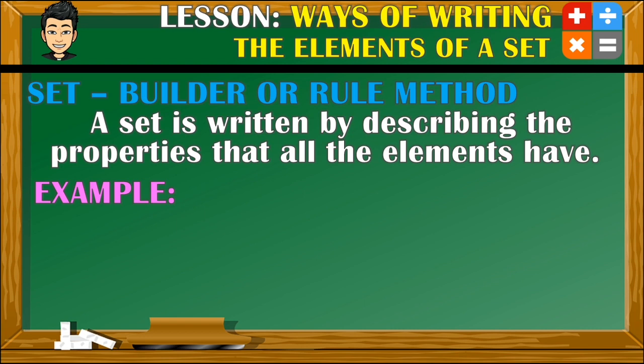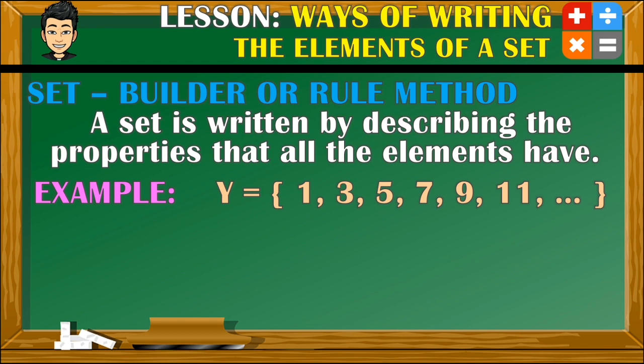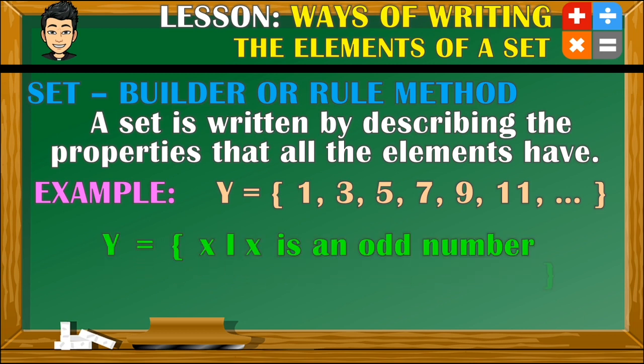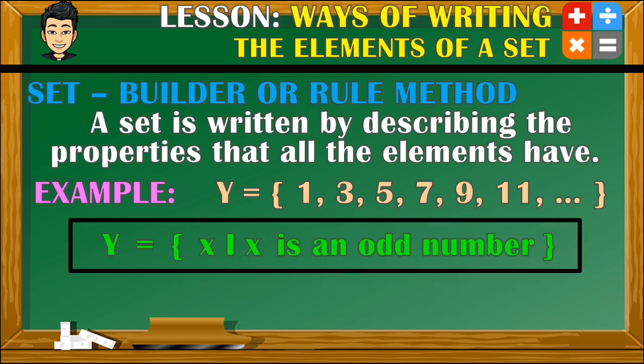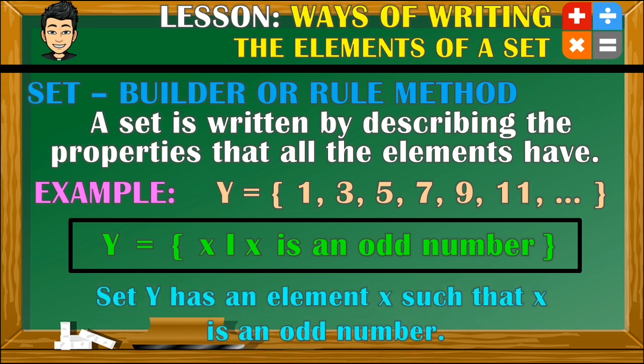For the next example, we have set Y with the following elements. As you can see, with the presence of an ellipsis, the elements are infinite or never ending. Also, they are not divisible by 2, and those numbers that cannot be divided by 2 are called odd numbers. So set Y will be represented in rule method like this. Set Y has an element x such that x is an odd number.